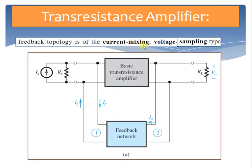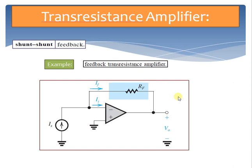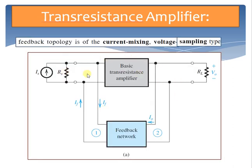The last topology is the transresistance amplifier, where the input signal is a current and the output signal is a voltage. The appropriate feedback topology is current mixing and voltage sampling. The parallel or shunt connection at both the input and the output makes this a shunt-shunt feedback topology. The shunt connection at the input reduces input resistance, and the shunt connection at the output stabilizes the output voltage, thus reducing output resistance.